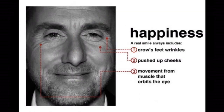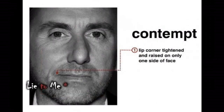Happiness. A real smile always includes crow's-feet wrinkles, pushed up cheeks, and movement from a muscle that orbits around the eye. Contempt. Lip corner tightened and raised only on one side of face.